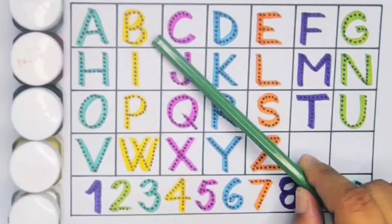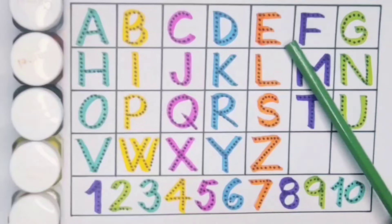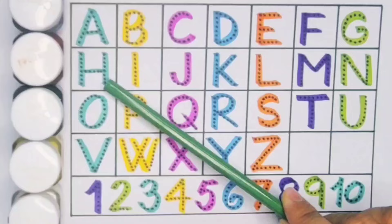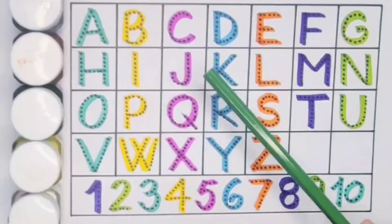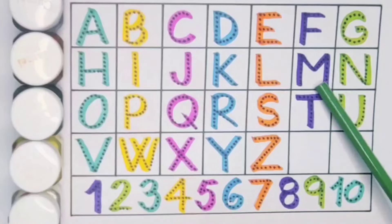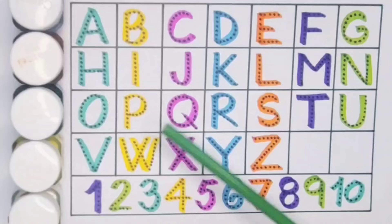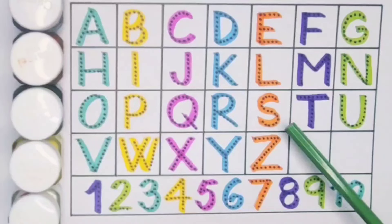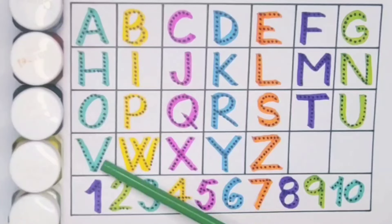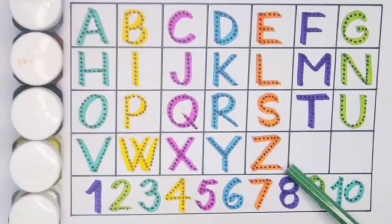We learn A for alligator, B for banana, C for carrot, D for doctor, E for eagle, F for flower, G for guitar, H for hand, I for insect, J for jeep, K for kettle, L for lamb, M for milk, N for net, O for octopus, P for panda, Q for quail, R for ring, S for strawberry, T for tomato, U for unicorn, V for vegetable, W for watermelon, X for xylophone, Y for yo-yo, and Z for zipper.